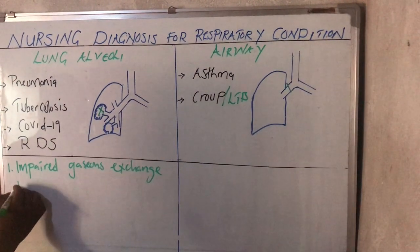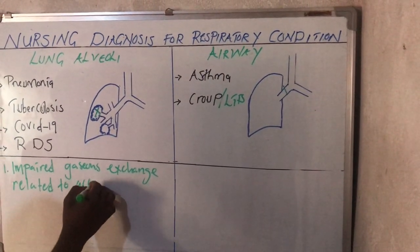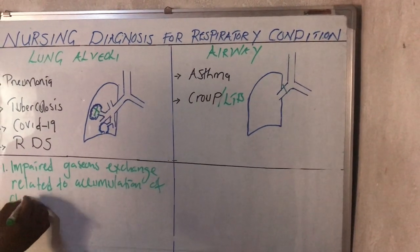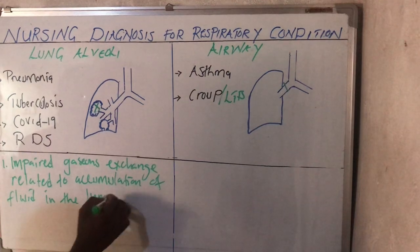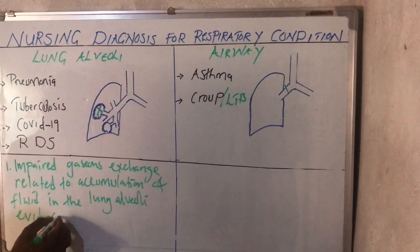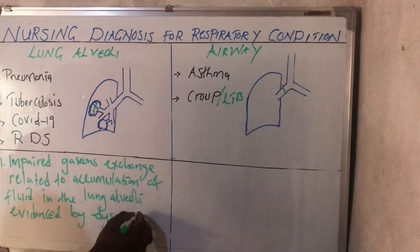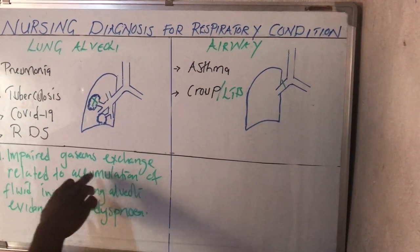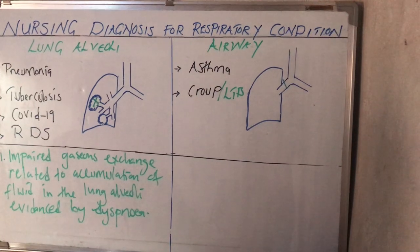Impaired gaseous exchange — related to accumulation of fluid in the lung alveoli, evidenced by dyspnea, or difficulties in breathing. When the patient has pneumonia, tuberculosis, COVID-19, or RDS, fluid enters inside the lung alveoli. Once the fluid enters, there will be alteration in the exchange of gas, which is going to make gaseous exchange to be impaired.